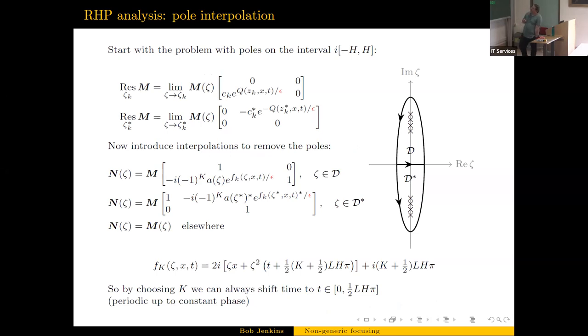So what we can do is pick this value K and we can always keep this quantity in parentheses in a fixed interval. This is basically the period. But you pay the price of this constant phase, but this thing you can remove from the problem - it's just the gauge invariance of phase for NLS.